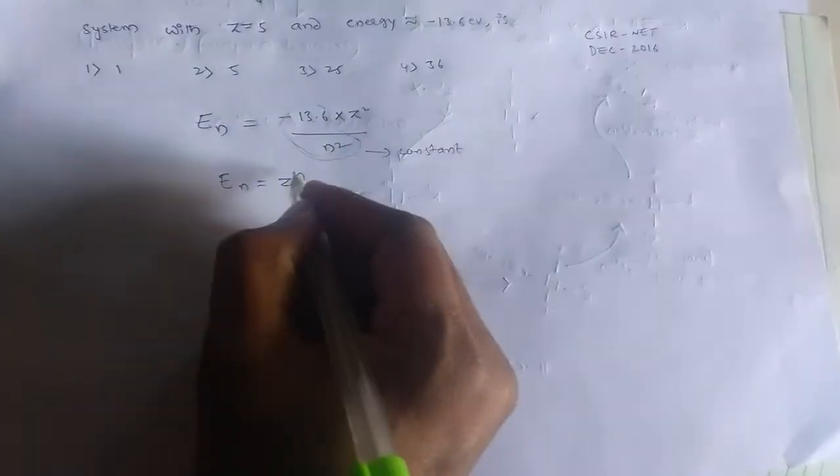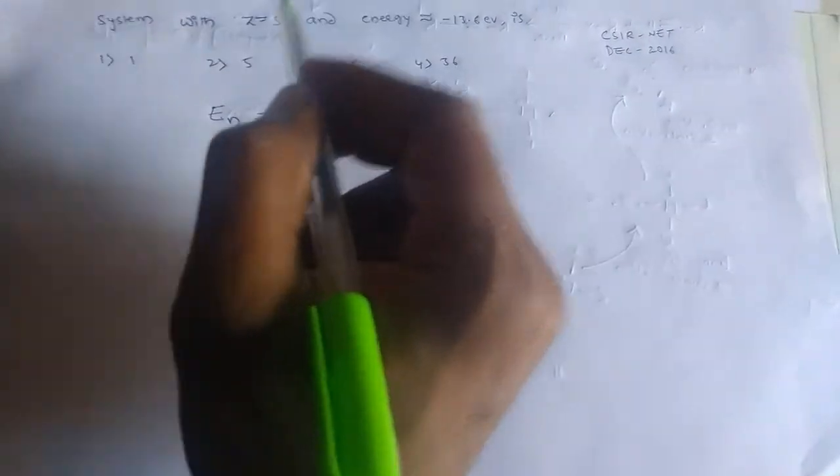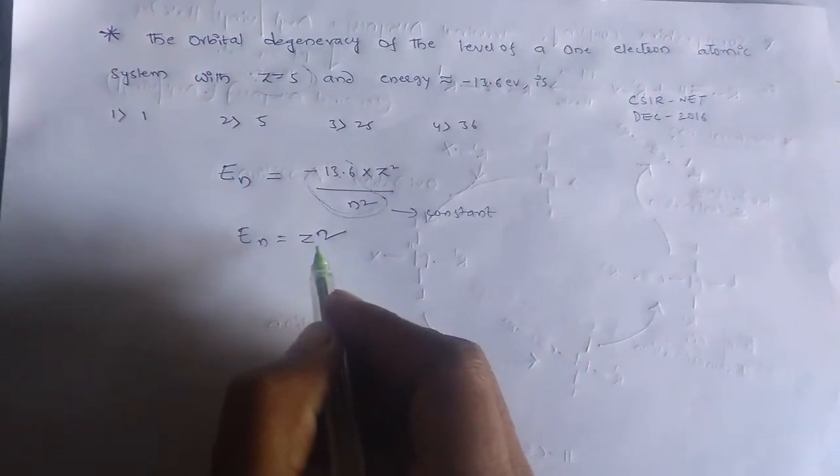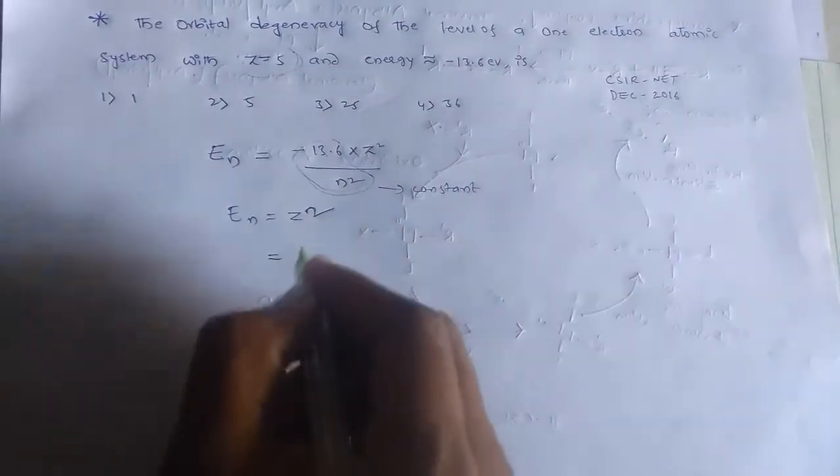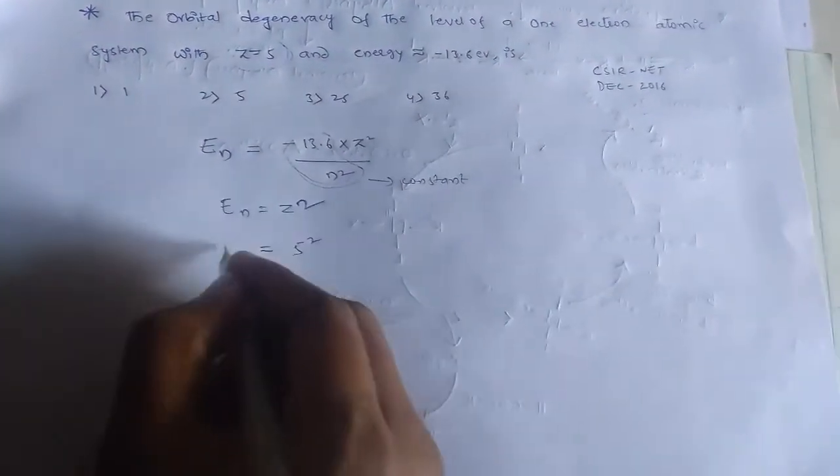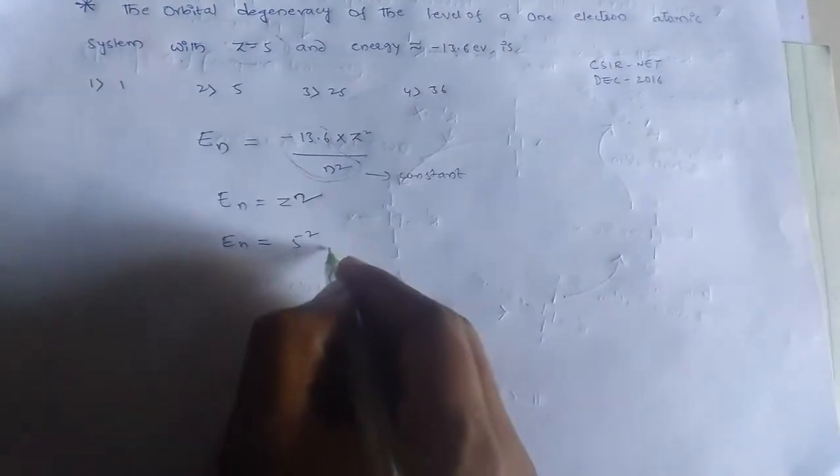So we have only Z equals 5, atomic number 5 in the question. So this is the given information for the question. So En equals Z squared. So Z equals 5. Substitute it, 5 squared, En equals 5 squared then 25.